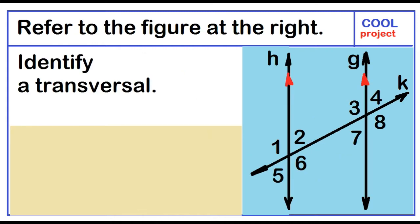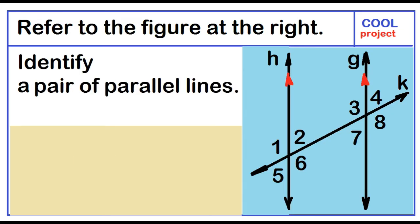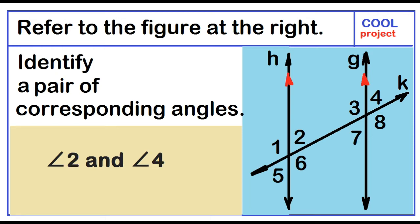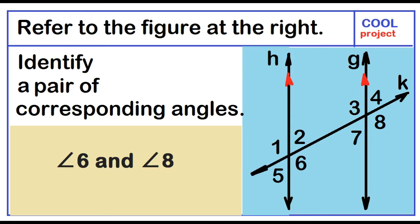Refer to the figure at the right. Identify a transversal: line K. Identify a pair of parallel lines: line H and line G. Identify a pair of corresponding angles: it can be angle 1 and angle 3, angle 2 and angle 4, angle 5 and angle 7, or angle 6 and angle 8.